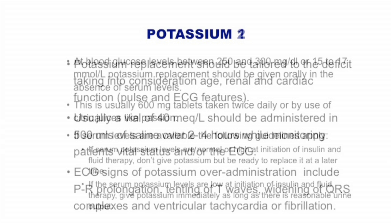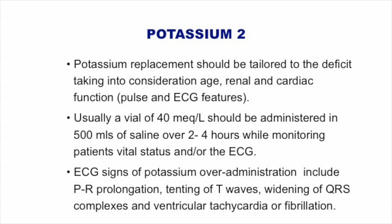Don't give potassium carelessly — you need to assess your individual patient carefully before you give it, because you can easily kill a person with DKA. Where handheld ECG monitors are available, look for ECG signs of potassium abnormality: PR prolongation, tenting of T-waves, widening of QRS complexes, ventricular tachycardia, ventricular fibrillation. Don't wait for all signs to appear — but if you have a monitor, these are the things to look for.